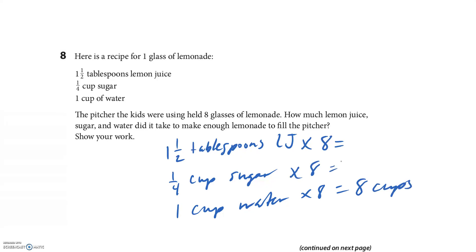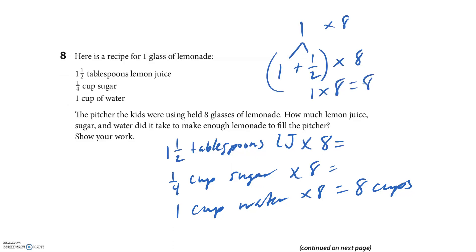For 1 and 1/2 tablespoons of lemon juice: take 1 + 1/2 and multiply each part by 8. One times 8 is 8, and half times 8 is 4. Add those up: 12 tablespoons of lemon juice. For 1/4 cup of sugar times 8: four times four would be one cup, so times 8 there are 2 cups of sugar. And 8 cups of water.